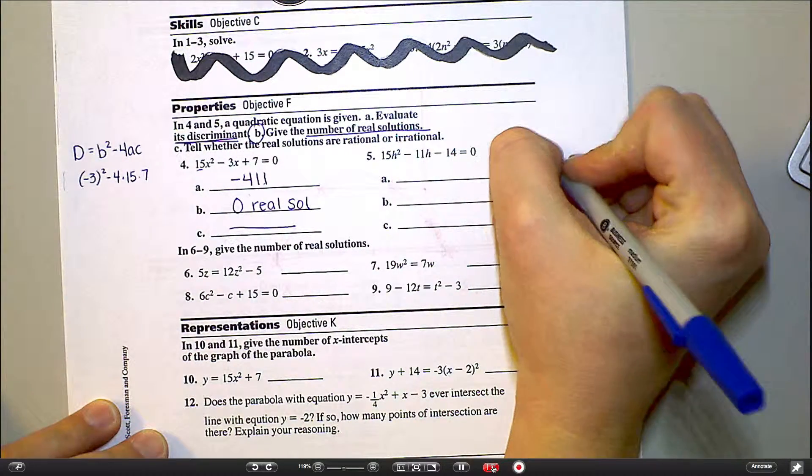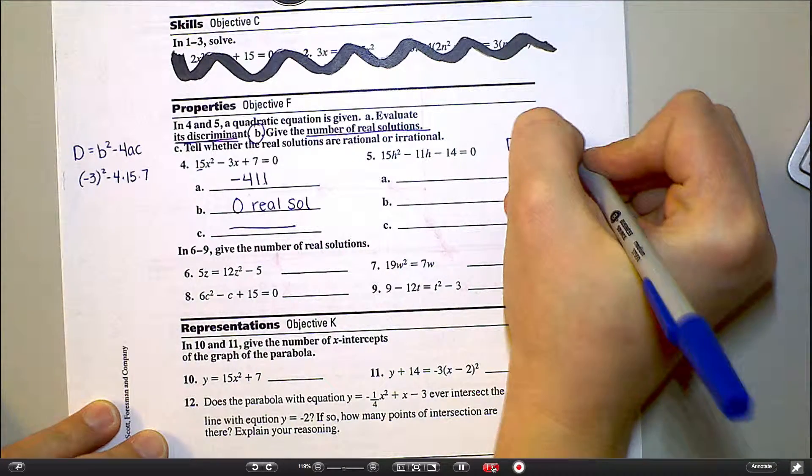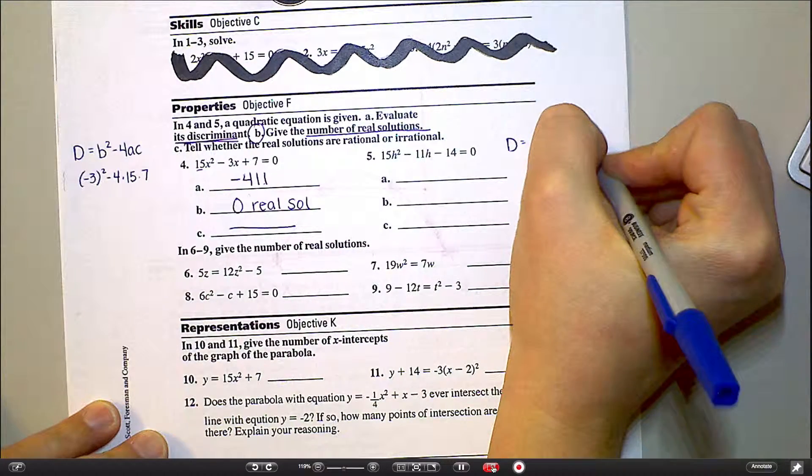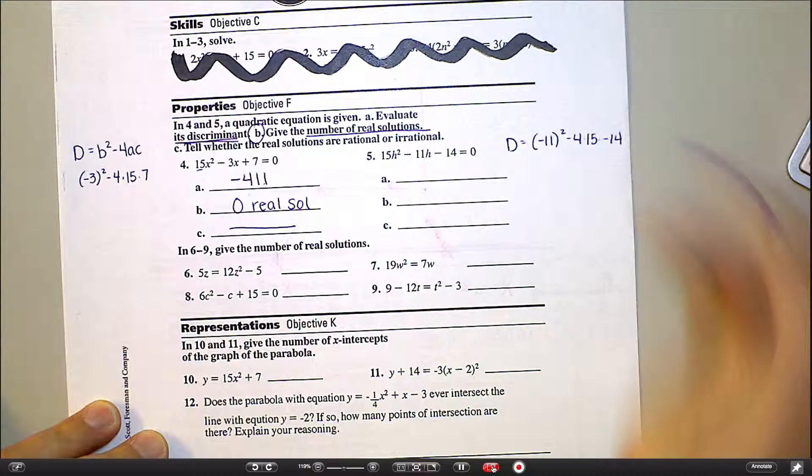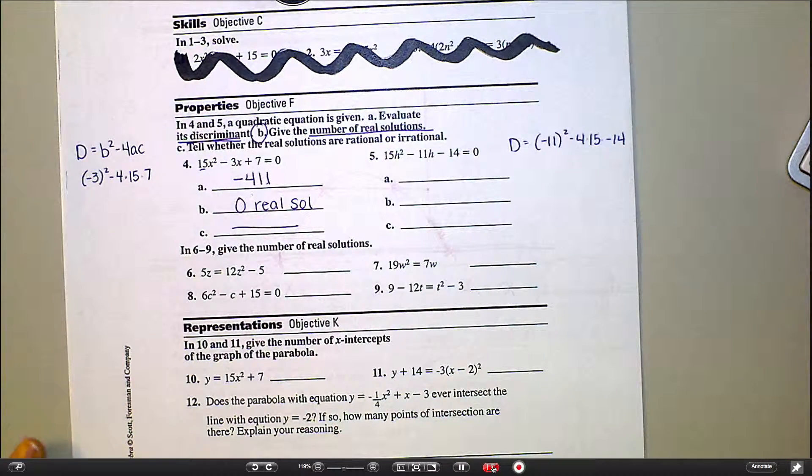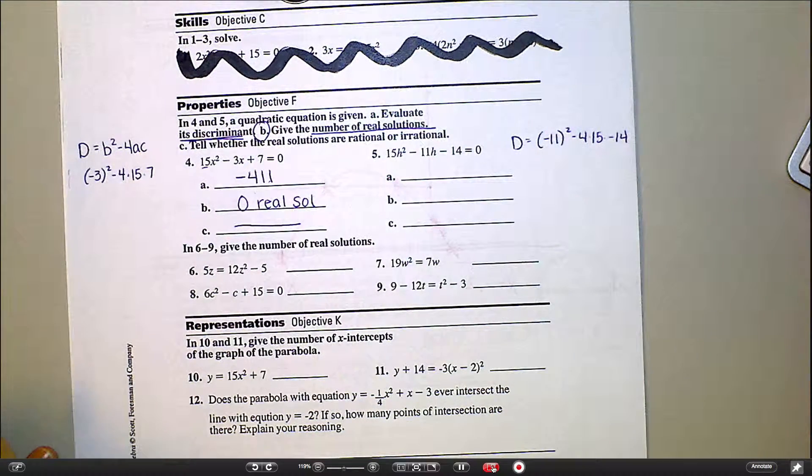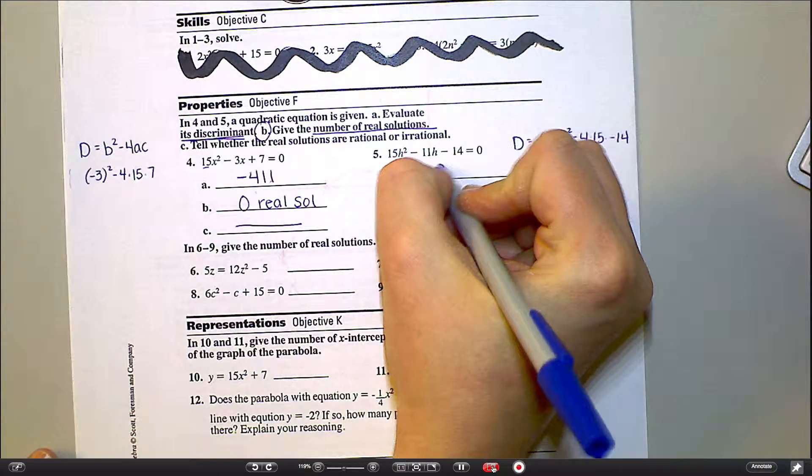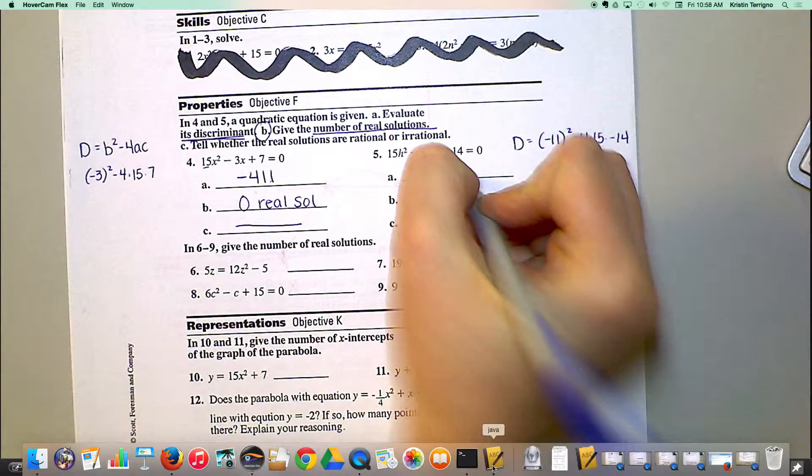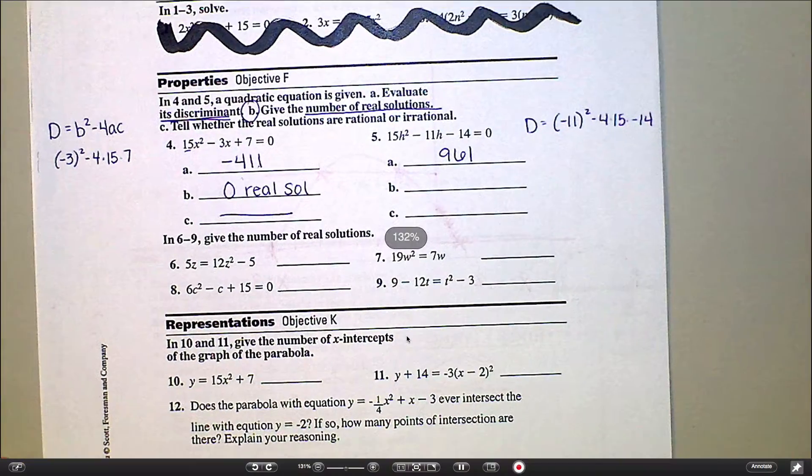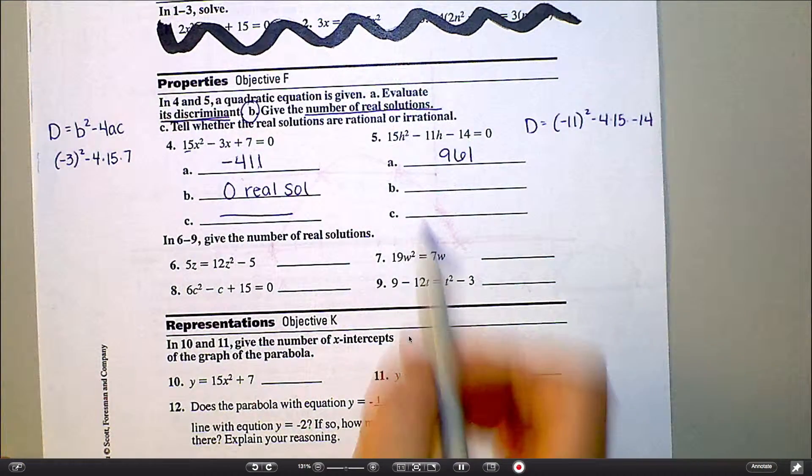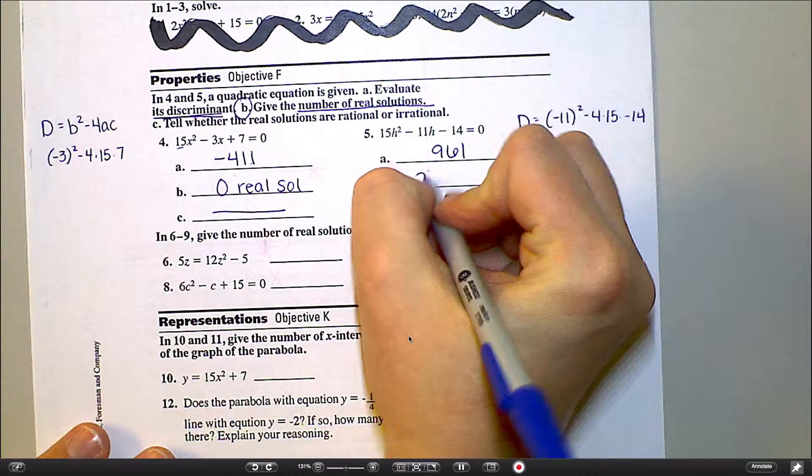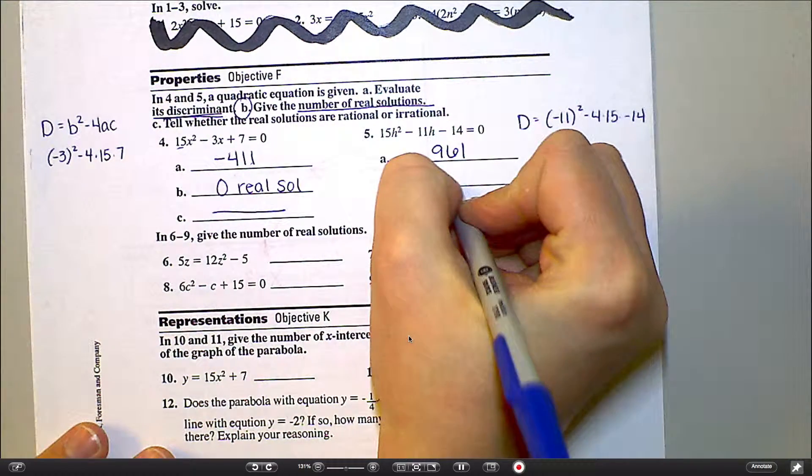So discriminant would be negative 11 squared minus 4 times 15 times negative 14. Negative 11 squared, minus 4 times 15 times negative 14. I get 961.